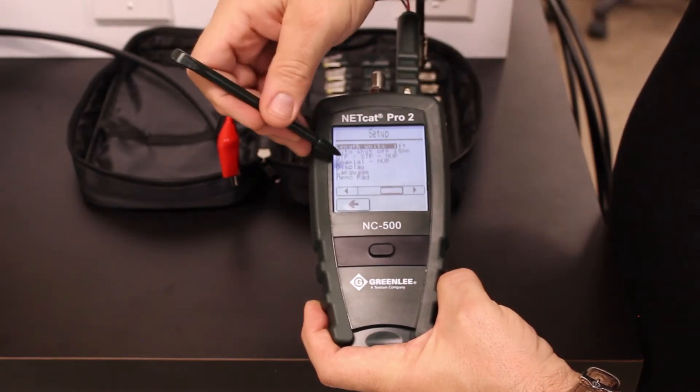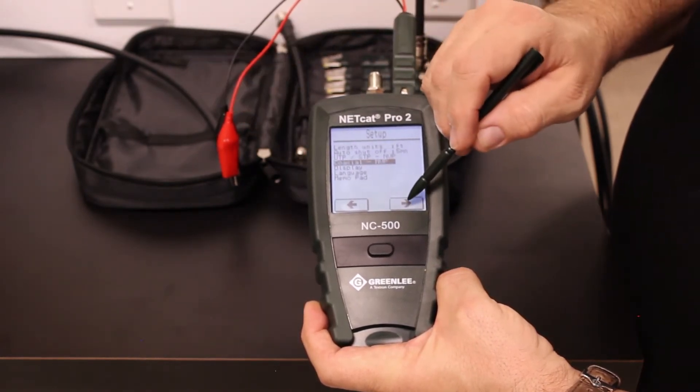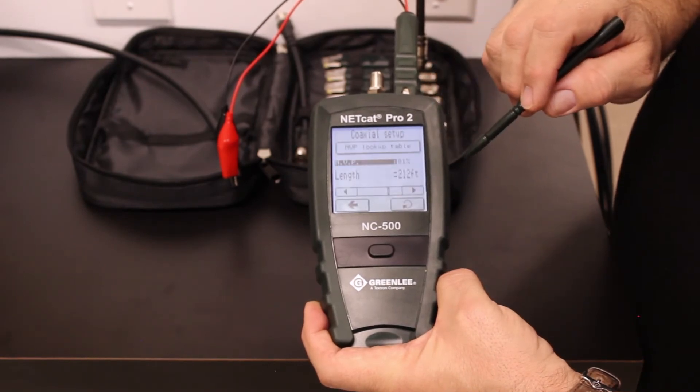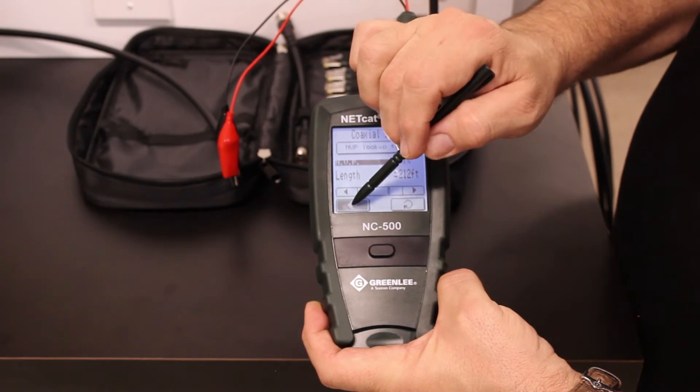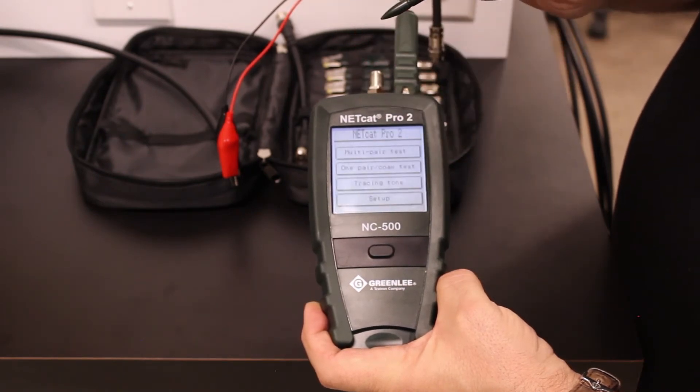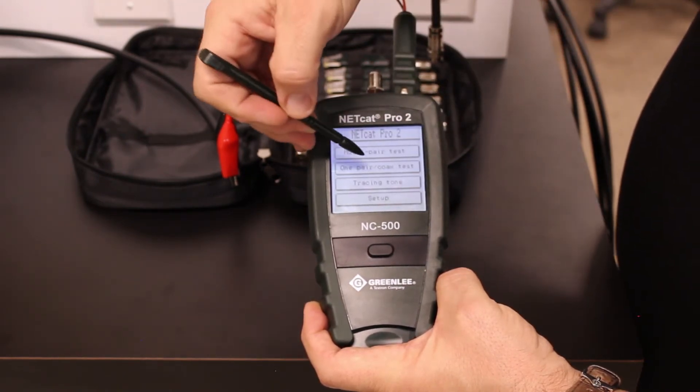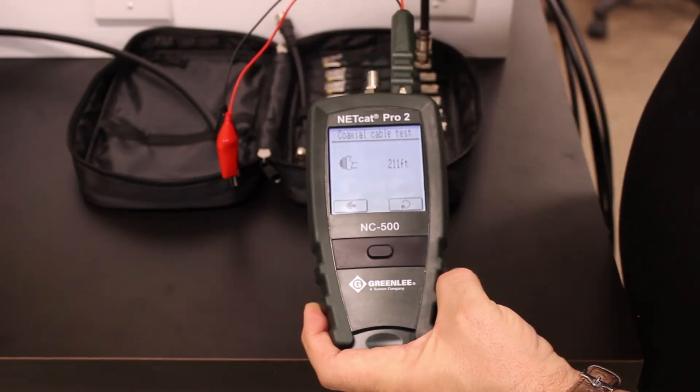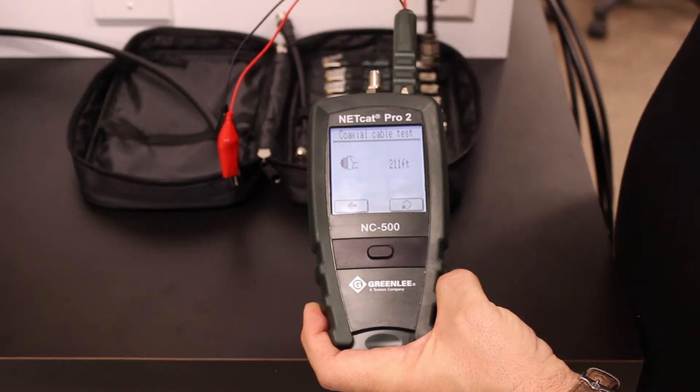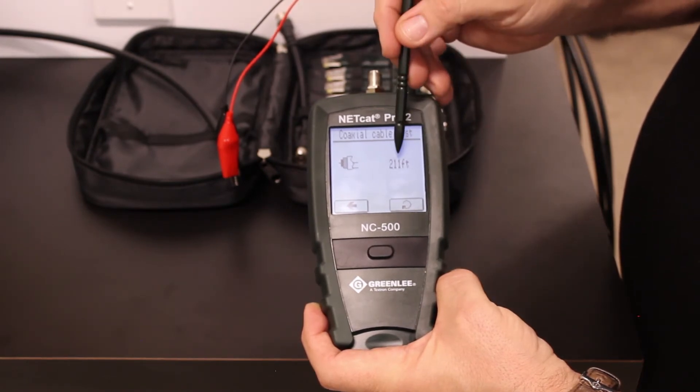Verify that the NVP is correct. For this cable, the NVP is also 81, so it is correct. Tap back out to the main menu, select the one pair coax test. The length of this spool of cable on this unterminated is 211 feet.